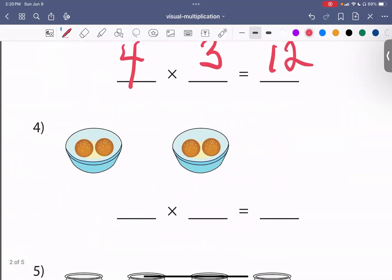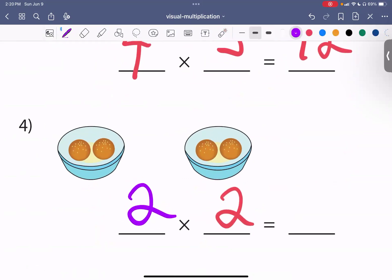We have two baskets and each basket has two buns. So that's the first bun, that's the second bun. So we have a total of four buns.